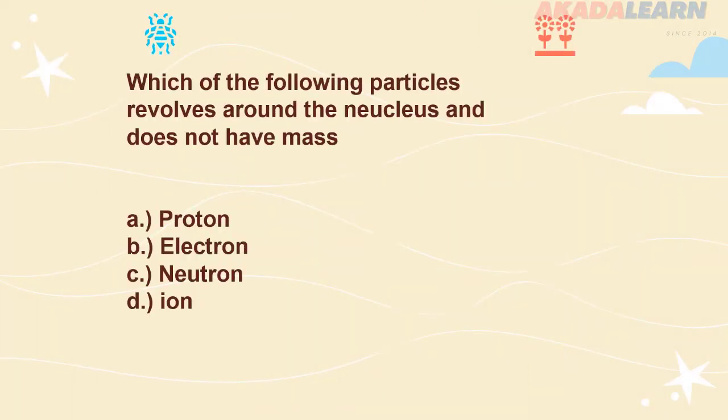Question 2. Which of the following particles revolve around the nucleus and does not have a mass? A. Proton B. Electron C. Neutron D. Ion